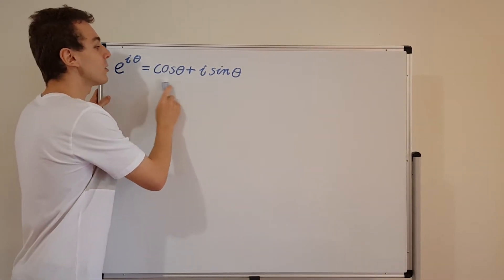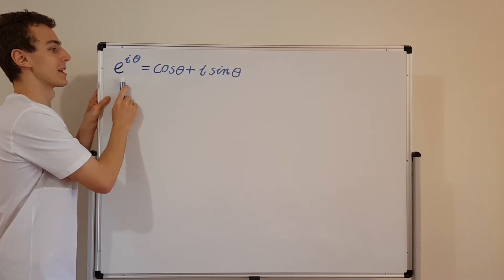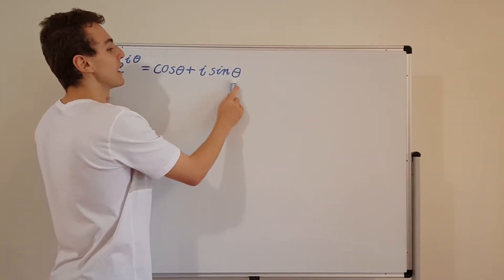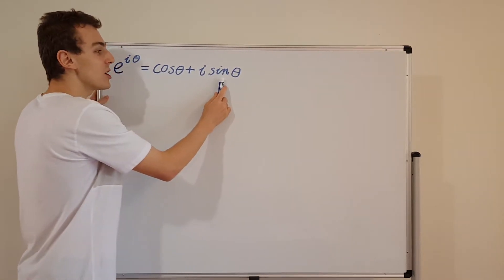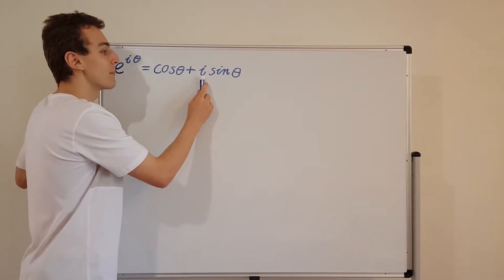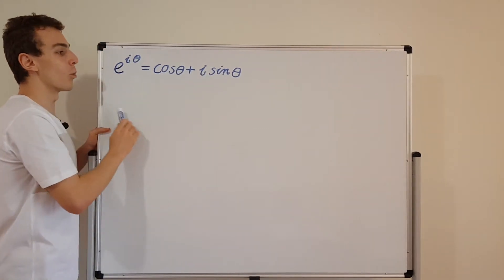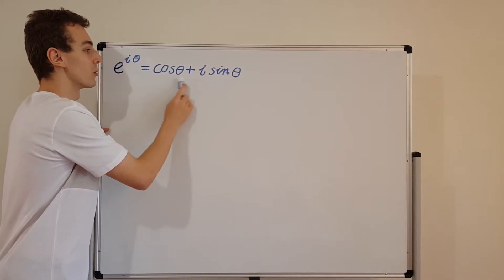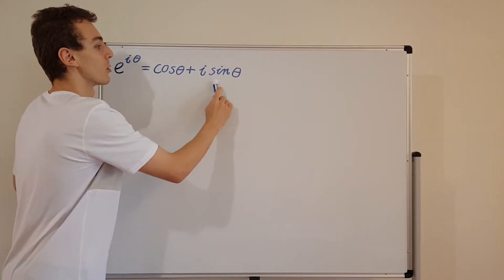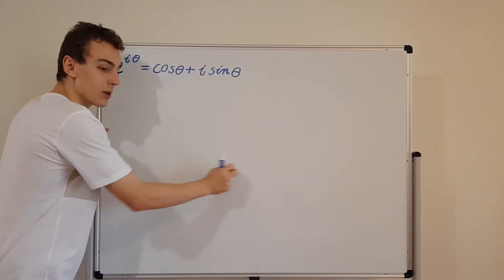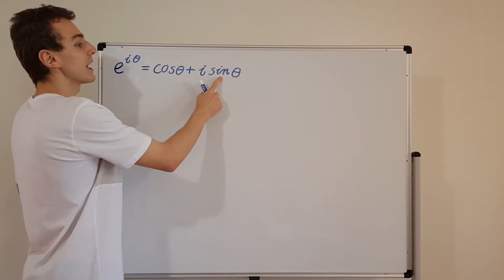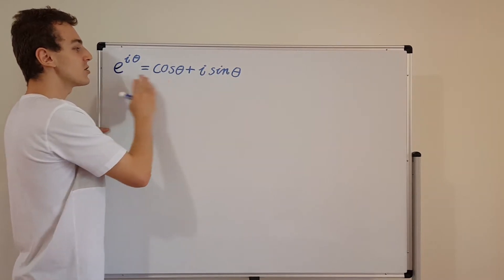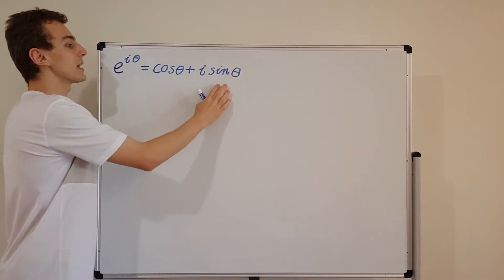Cosine of theta is the real component of this complex exponential, and sine of theta is the imaginary component, which gets multiplied by the imaginary unit i. When you draw this on the complex plane, cosine is the horizontal component and sine is the vertical component, because we draw the real component on the horizontal axis and the imaginary component on the vertical axis. So these are two equivalent ways of representing a complex number.